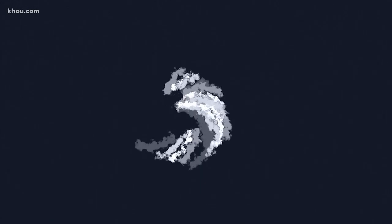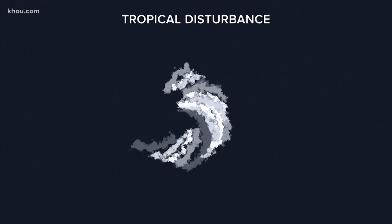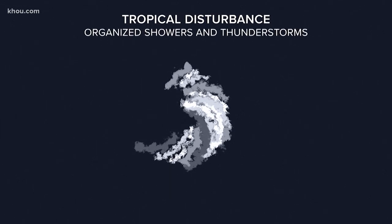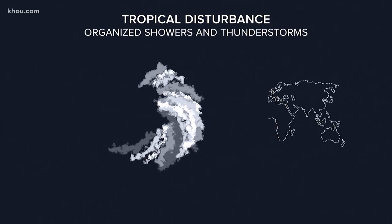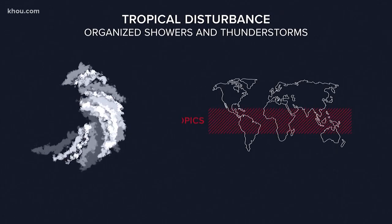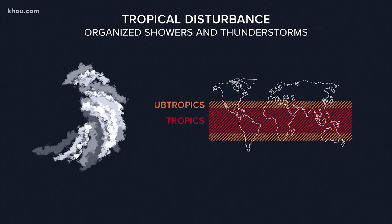First, let's start with a tropical disturbance. This is simply a discreet weather system with relatively organized shower and thunderstorm activity that originates in the tropics or subtropics.